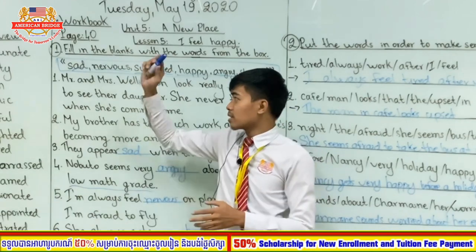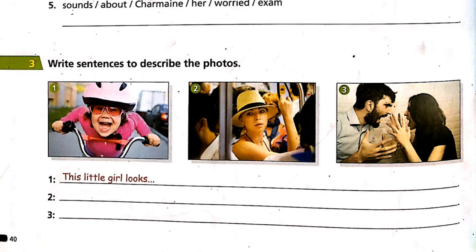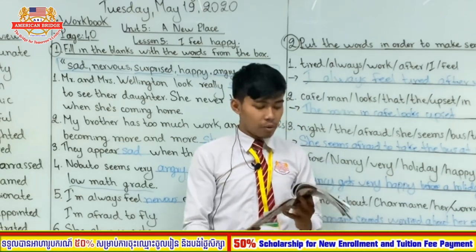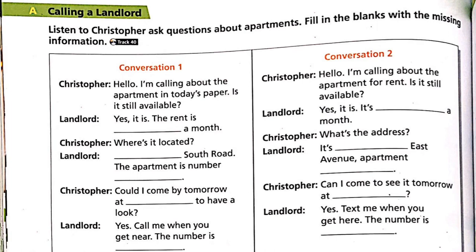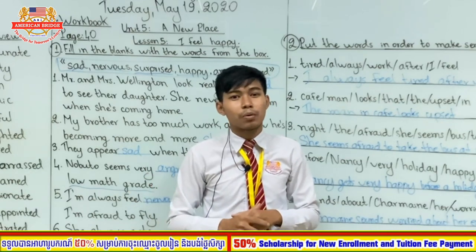We have finished lesson five exercise one and exercise two. Exercise three on page 40 is: write sentences to describe the pictures. There are three photos — number one, two, and three. Describe what the person looks like, for example: this little girl looks happy, looks sad, etc. That is your classwork. Now for your homework: open your student book to page 74. The homework is exercise A: Calling a Landlord. Listen to Christopher ask questions about an apartment and fill in the blanks. Today is Tuesday, so tomorrow is Wednesday — we will study writing. Don't forget your homework.